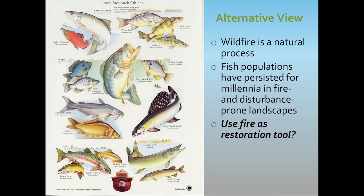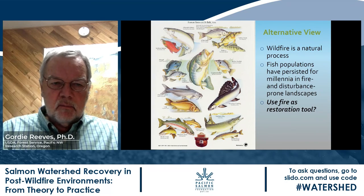In conclusion, we would argue that wildfire is a natural process and fish populations have persisted in these landscapes. The key is to refocus our effort from just producing more fish to achieving greater diversity of fish — trying to get genetic and life history diversity back into these populations. Fire can be a restoration tool. With that, we've hit the end and will go to the next speaker.